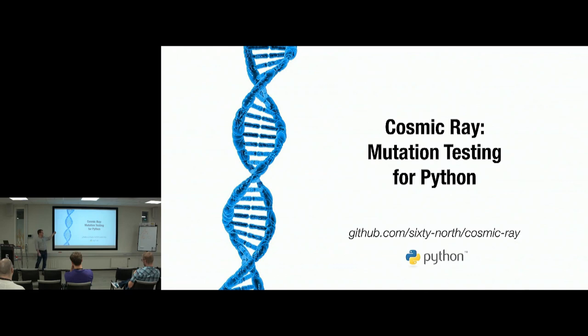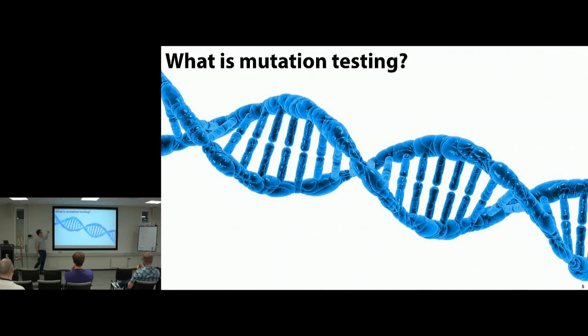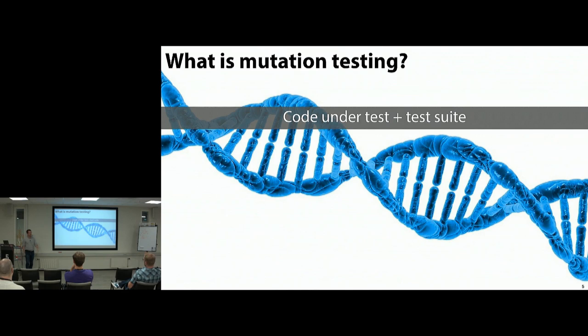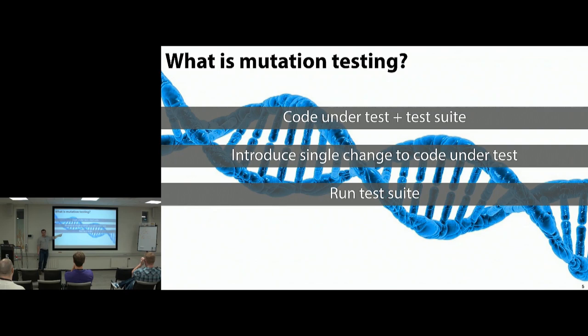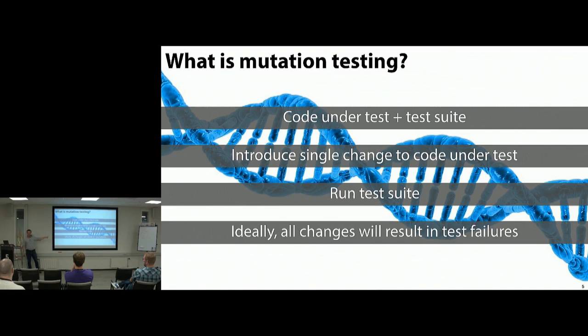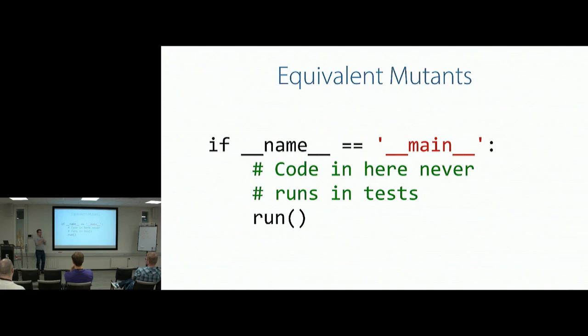I approached this problem from another project I work on: Cosmic Ray, a mutation testing tool for Python. What is mutation testing? You have some code under test — your library, your application — and you have a test suite. I introduce a single small change, typically very small, like changing an operator from greater-than to less-than, and I run my tests. My tests should fail — they should be high-fidelity enough to detect a change of that significance.